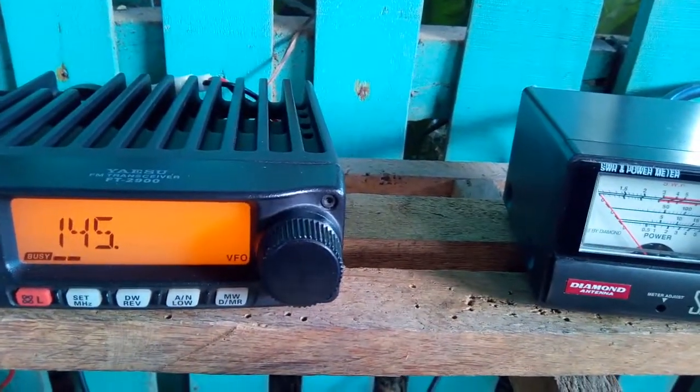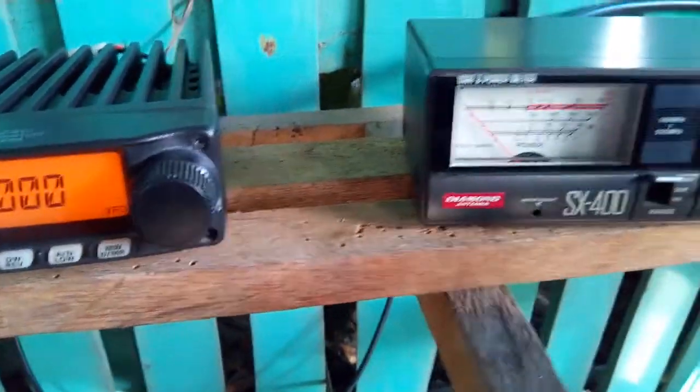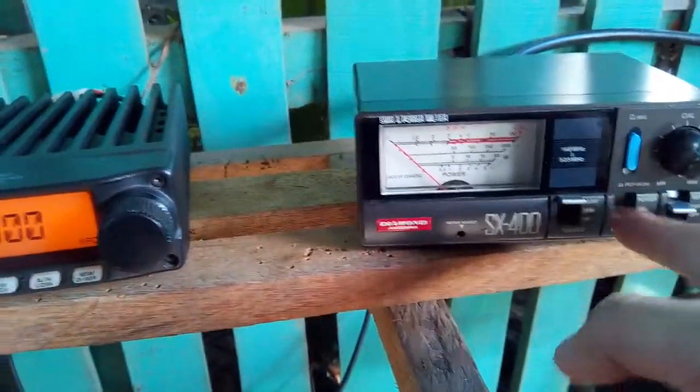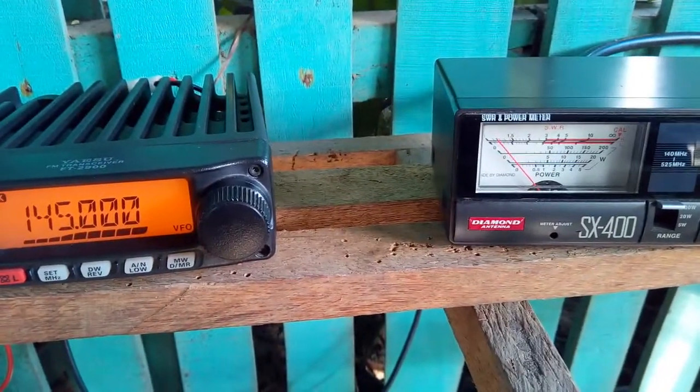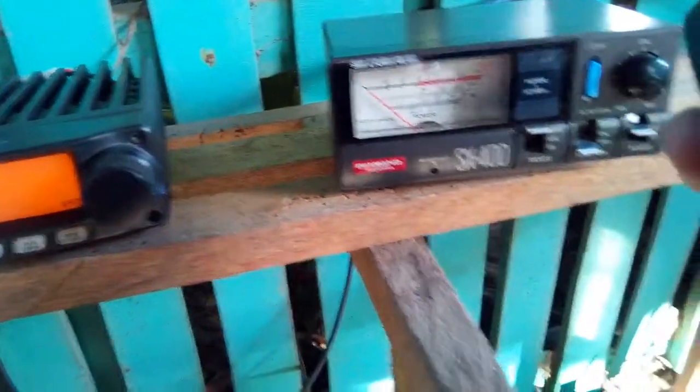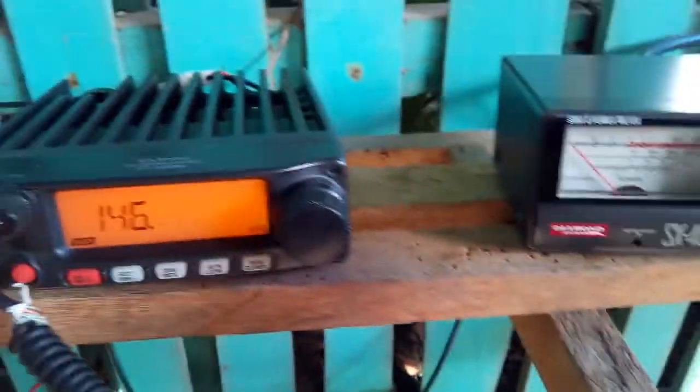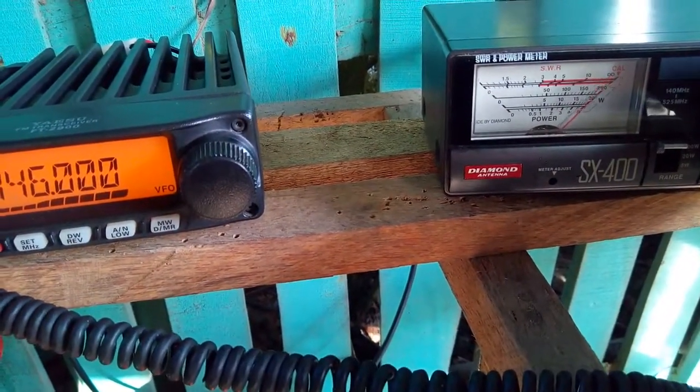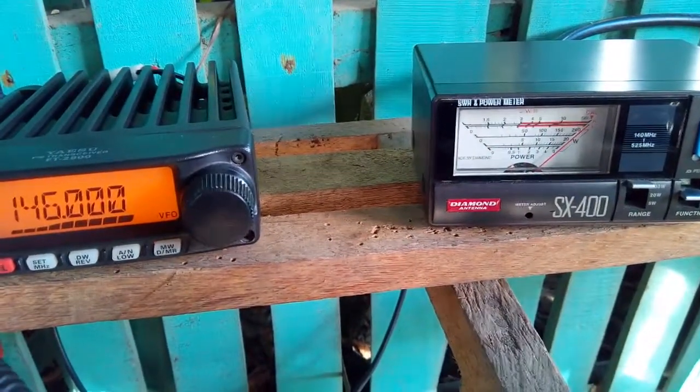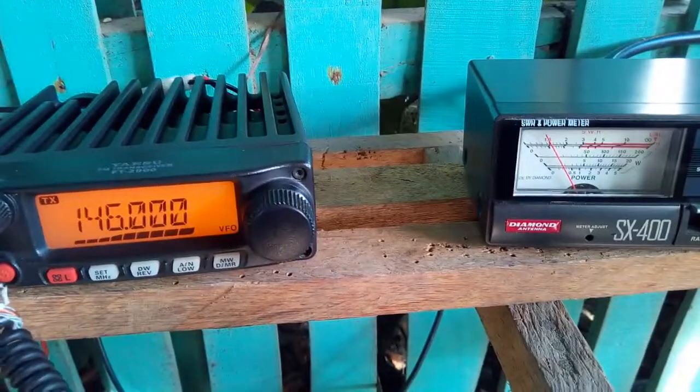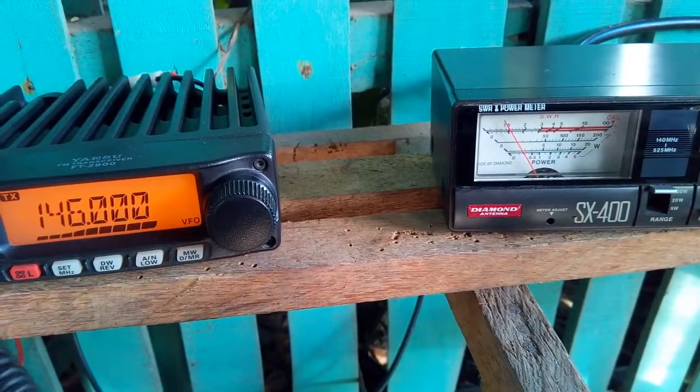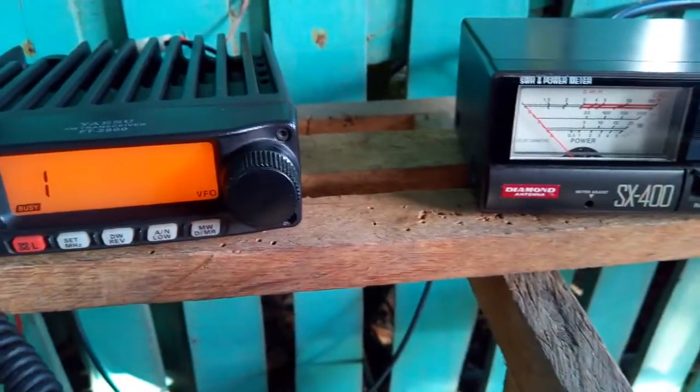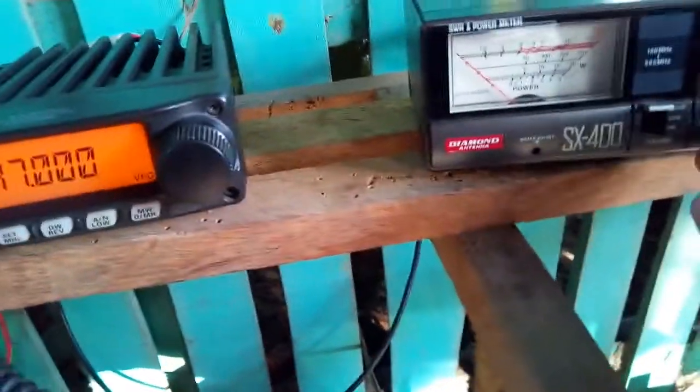Let's check 145. We already checked this before, so let's recalibrate. Move to SWR position, we have 1.1. Let's check 146, recalibrate. 146, switch to SWR mode, it's 1.5 or 1.4 SWR. 147, we have full deflection, move to SWR mode, we have 1.7.